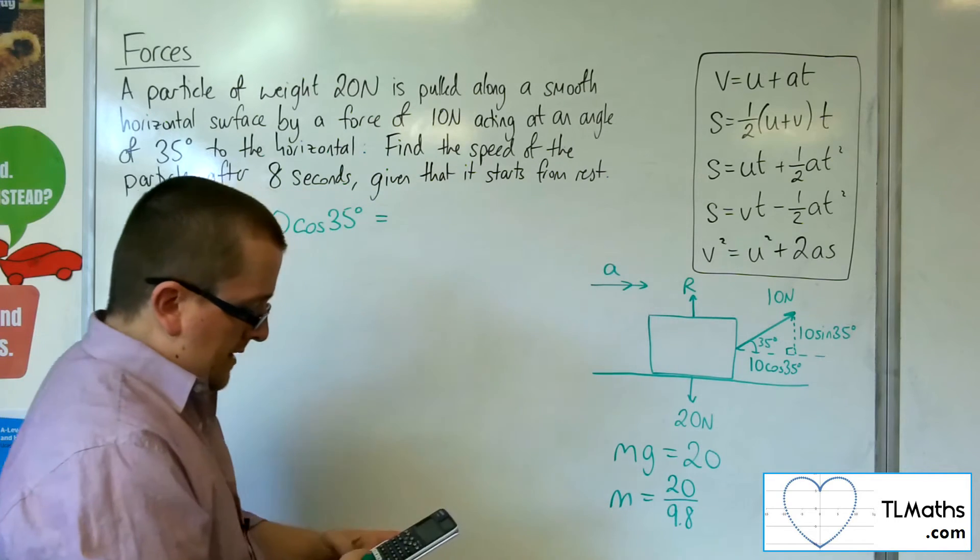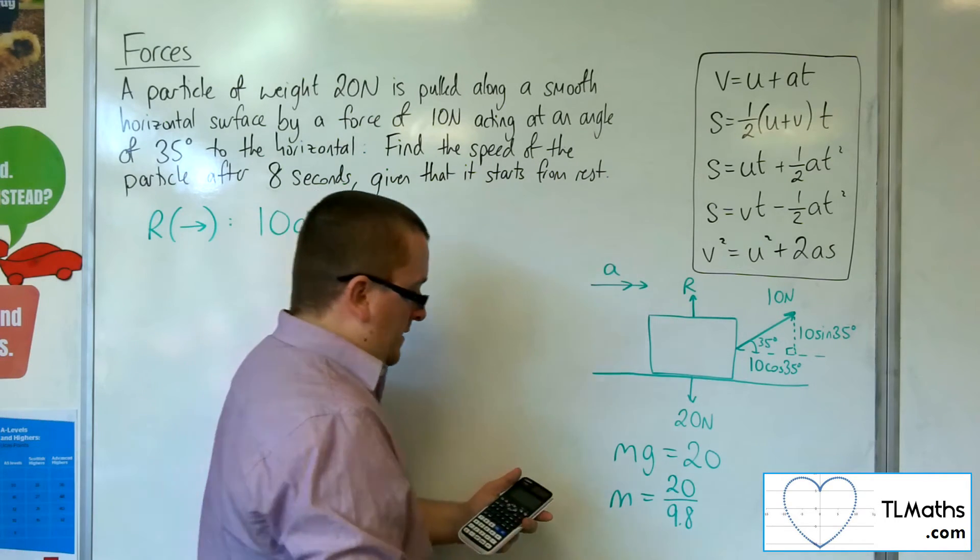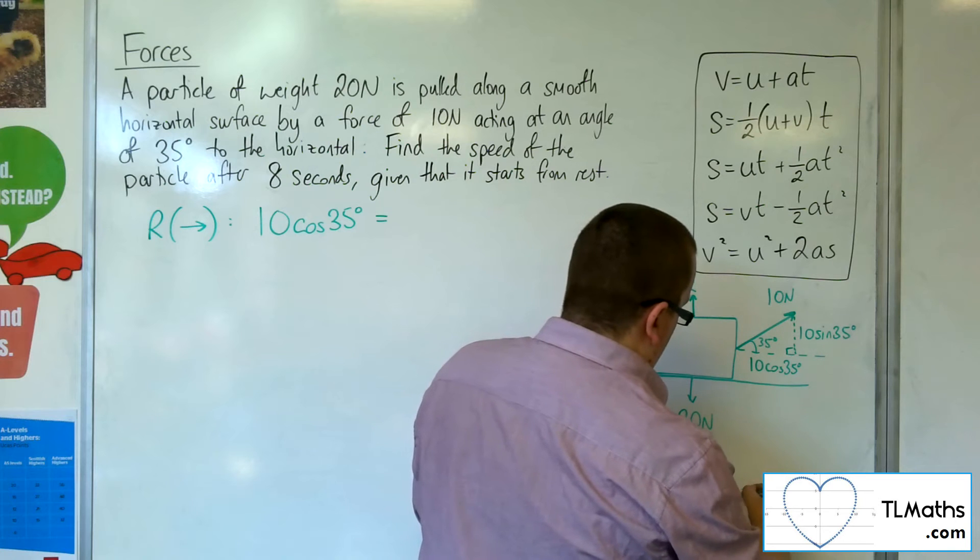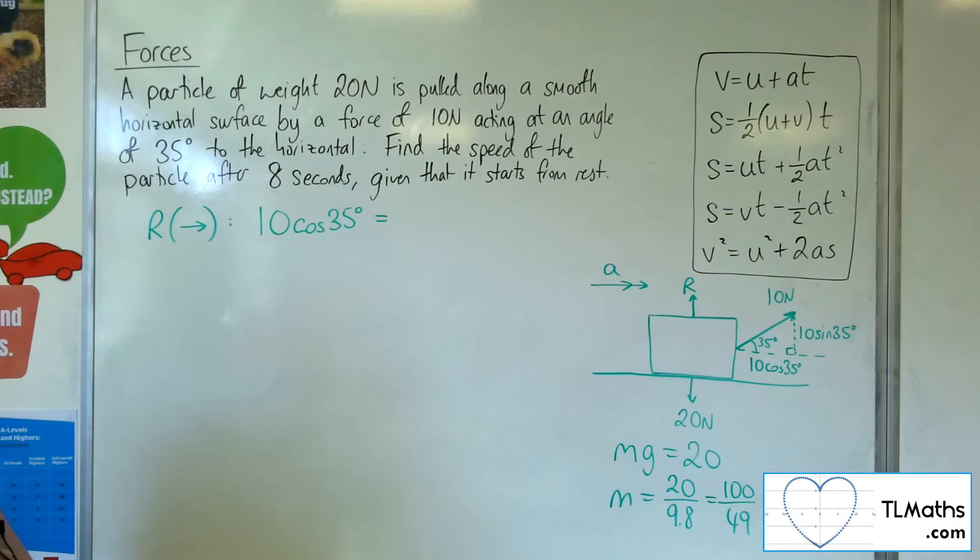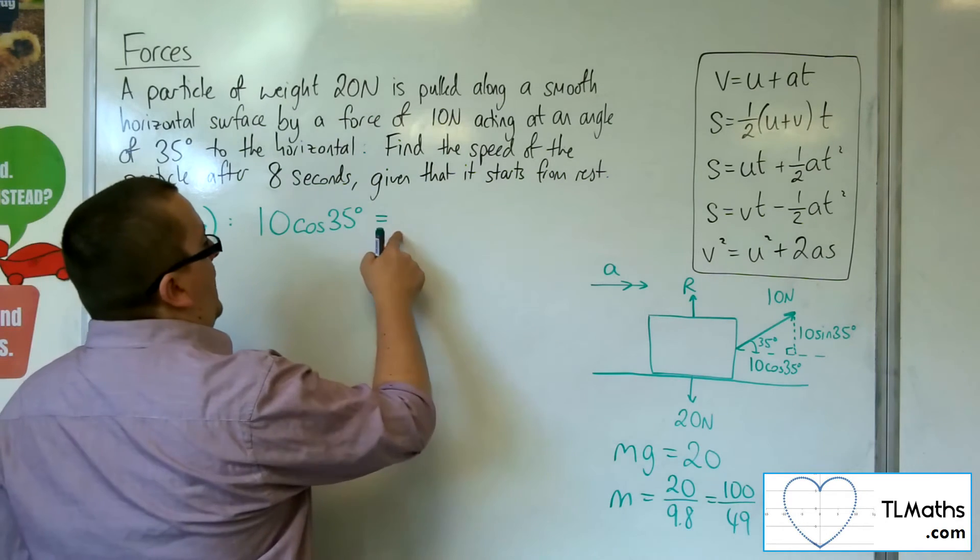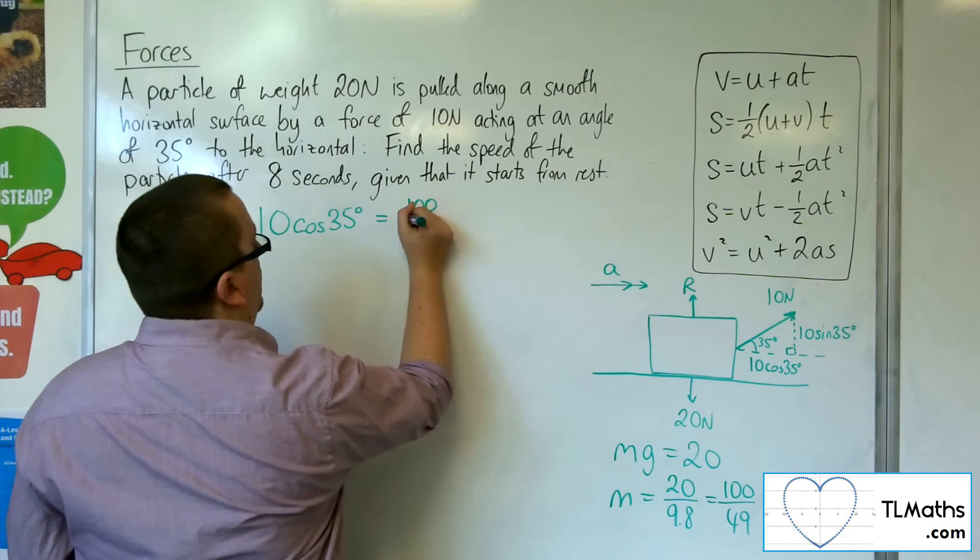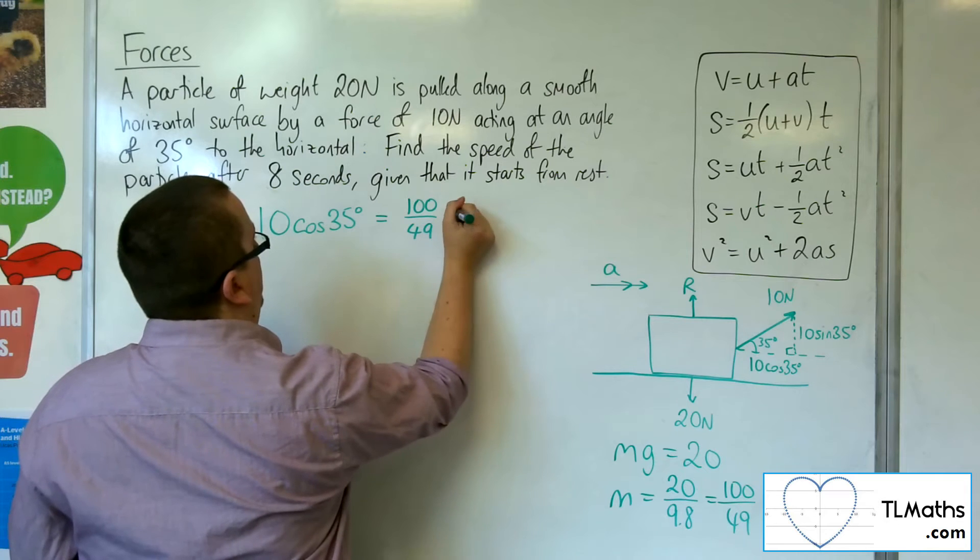So, that would be 20 over 9.8. Now, that simplifies to 100 over 49. So, I'll write it as 100 over 49.